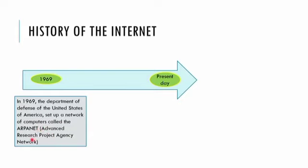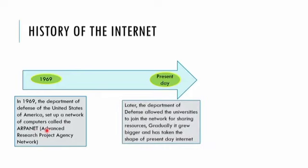ARPANET stands for Advanced Research Projects Agency Network. The aim of designing such a computer network was to share information on research and development in the field of science and technology. ARPANET was the first computer network and it forms the basis of the internet.